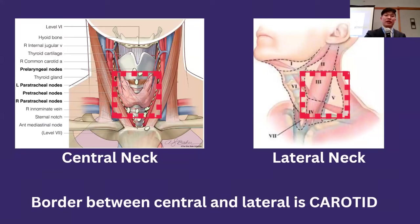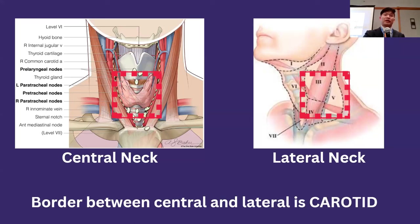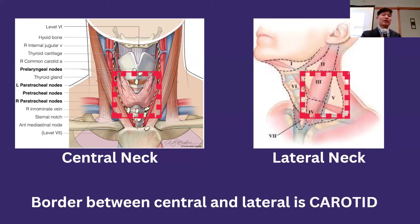Lymph nodes can be categorized into different areas. We often talk about the central neck and the lateral neck. Central neck nodes are bounded on either side by the carotid artery next to the thyroid. Nodes to the side of the carotid all the way out to the ear are considered nodes in the lateral neck. The border between central and lateral is just the carotid artery — this is simply the way physicians communicate clearly with each other.